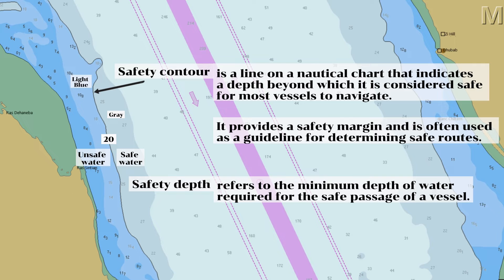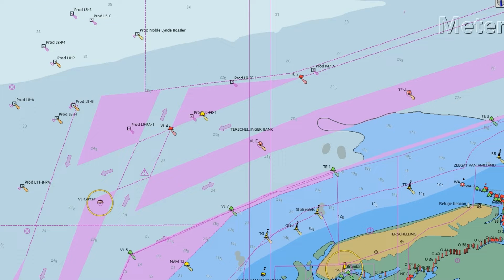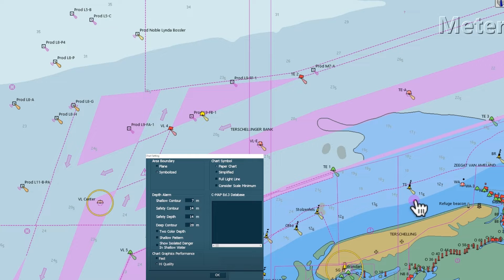Safety depth refers to the minimum depth of water required for the safe passage of a vessel — it is the minimum depth a ship should have beneath its keel to avoid grounding or other navigational hazards. It is often set to the same value as the safety contour to ensure safe navigation. Let us go to another ENC. The setting for the safety parameters in this ENC is the same as the previous one, with the entered value for safety depth set to 14 meters, as well as the safety contour. This is the shallow contour, and this one is the safety contour that includes a portion of the TSS.